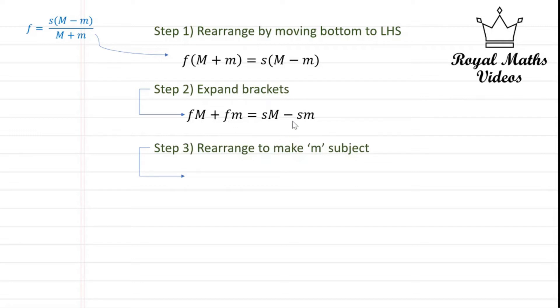This is an easy way to simplify everything together. So this gives us f times lowercase m plus s times lowercase m is equal to s times uppercase M minus f times uppercase M.